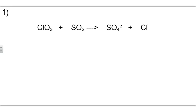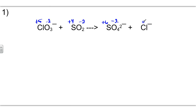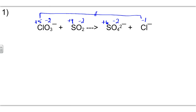In our first example, we start by labeling oxidation states. Oxygen is negative two; two times three is negative six, so chlorine is plus five. For the other species, oxygen is negative two again; two times two is negative four, so sulfur is plus four. The chloride ion has a negative one charge. So chlorine changes from plus five to minus one, and that is a reduction.